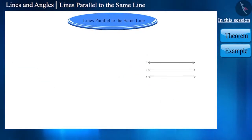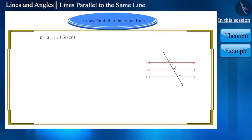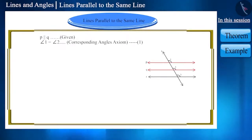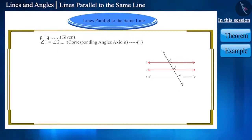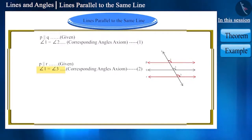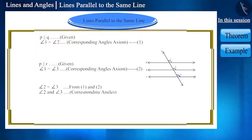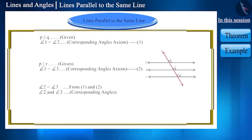So let's draw a transversal line S. Here, lines P and Q are parallel, therefore using the corresponding angles axiom we can say that angle 1 and angle 2 will be equal. And since lines P and R are also parallel, angle 1 and angle 3 will be equal. Looking at both statements, we can say that angle 2 and angle 3 will also be equal. Note that these are corresponding angles drawn by transversal S with lines Q and R.